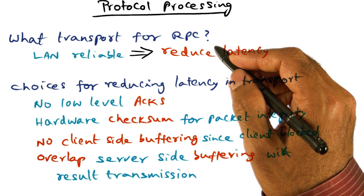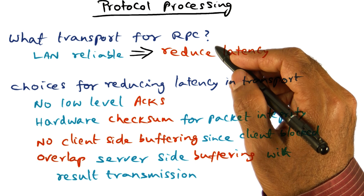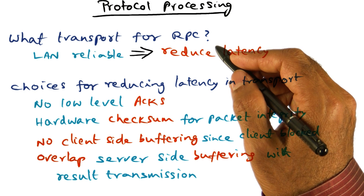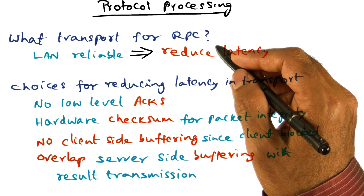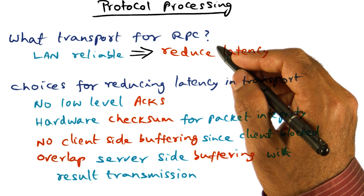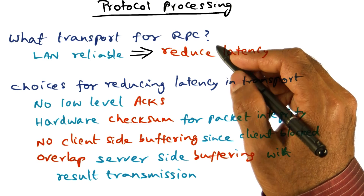And we're going to take whatever the hardware gives us. If the hardware gives us an ability to do DMA from the client buffer, we'll use that. But if it doesn't, then we have to incur that. So that's what we are seeing here as the opportunities for reducing the total latency in going from the client to the server and back to the client in RPC.